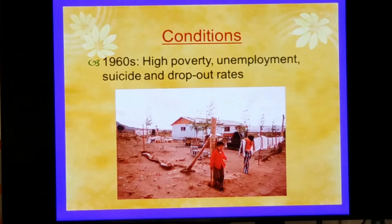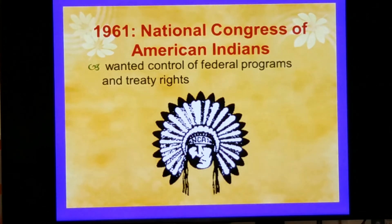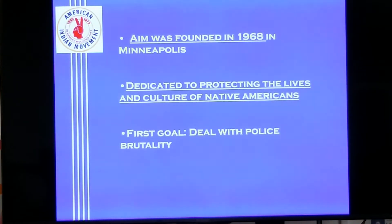With all that said, in 1961, American Indian groups started forming in a more modern sense to address these issues. The National Congress of American Indians was formed in 1961 — they wanted to control federal programs and treaty rights, and take control from the Bureau of Indian Affairs. Then in 1968, the American Indian Movement, AIM, was founded in Minneapolis, Minnesota, dedicated to protecting the lives and culture of Native Americans. Their first goal was to deal with police brutality on the reservations.